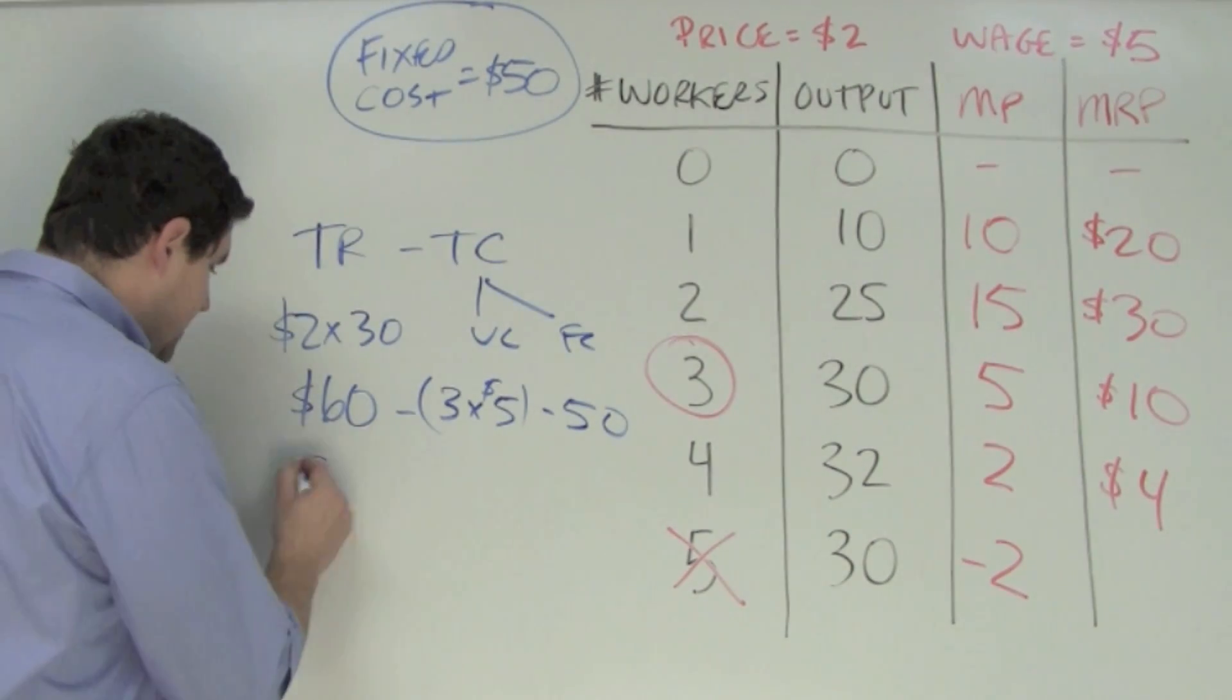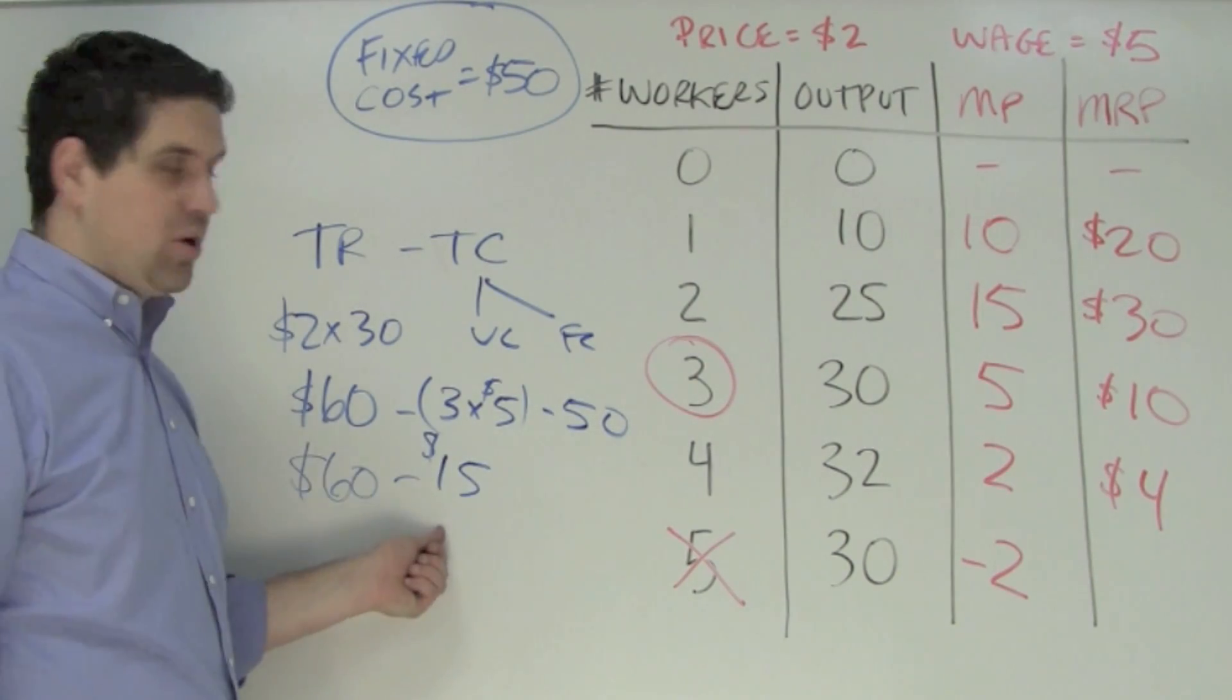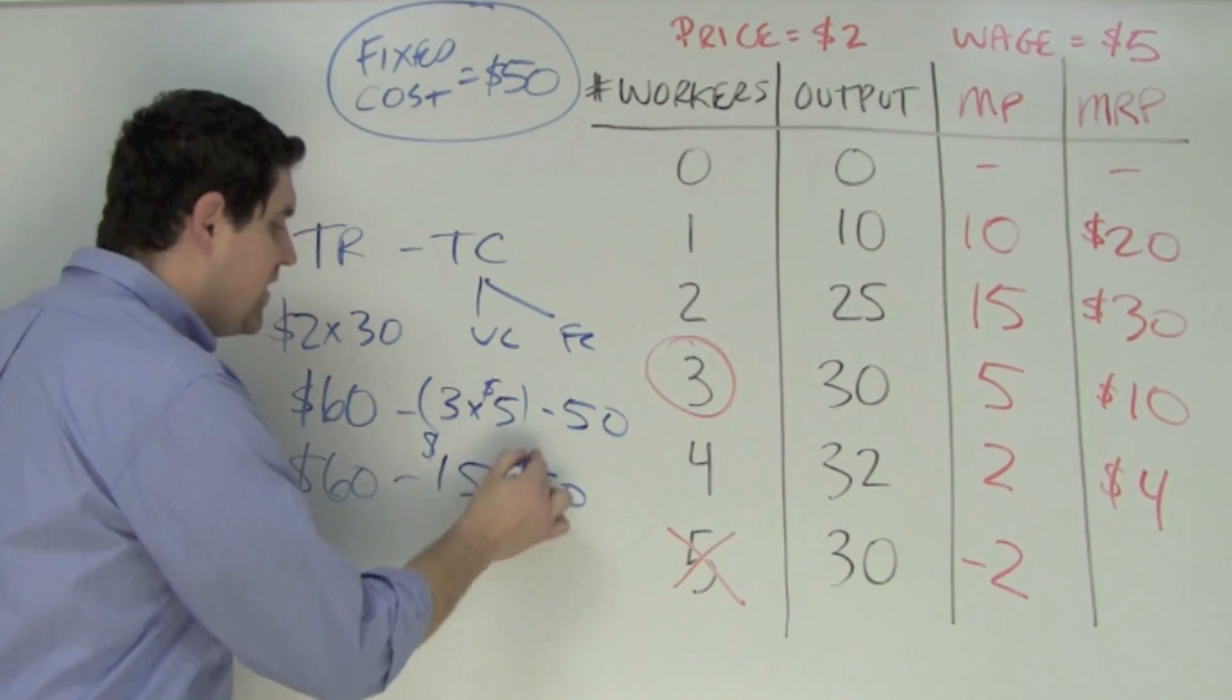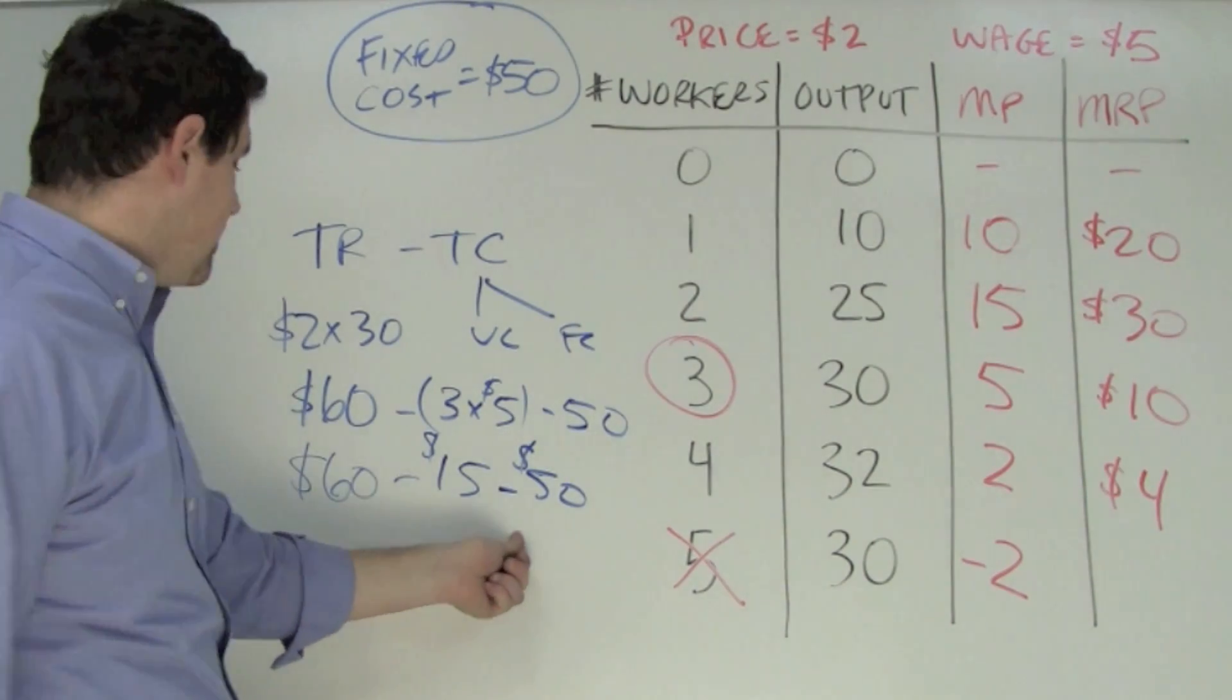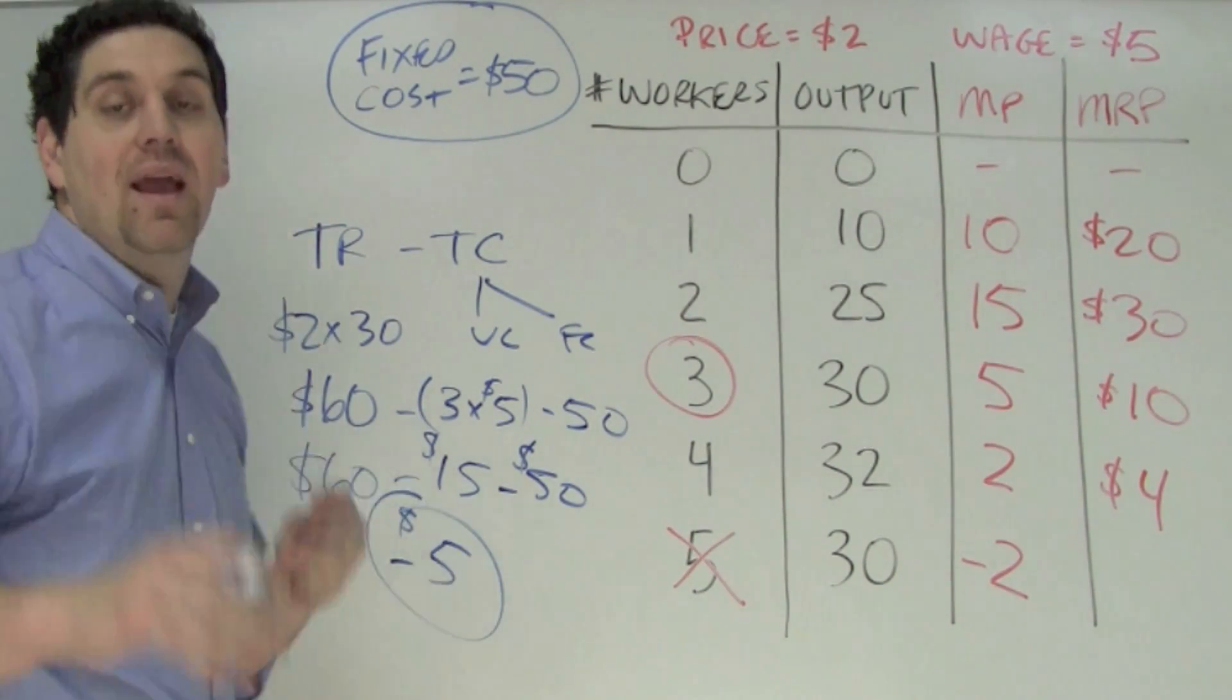So let's put it all together. $60 of revenue coming in, minus the $15 of variable cost, and also subtract the $50 of fixed cost, gives us a grand total of negative $5. So this firm is making a loss.